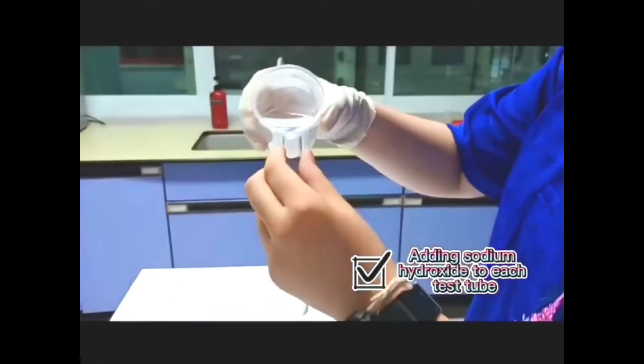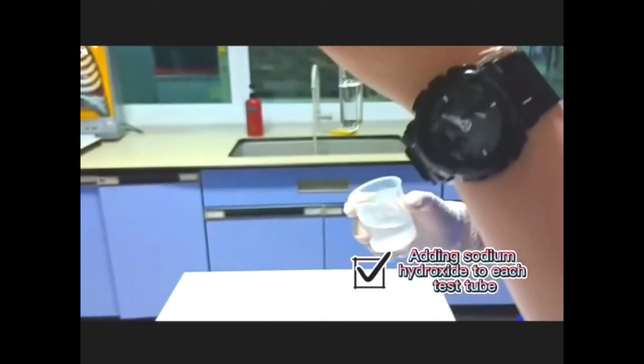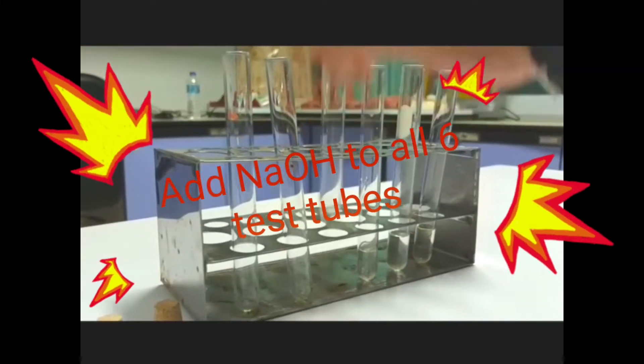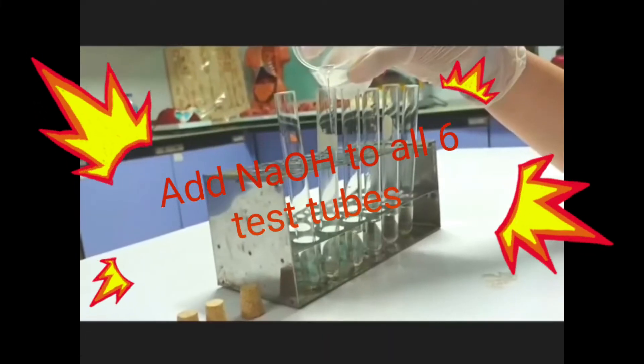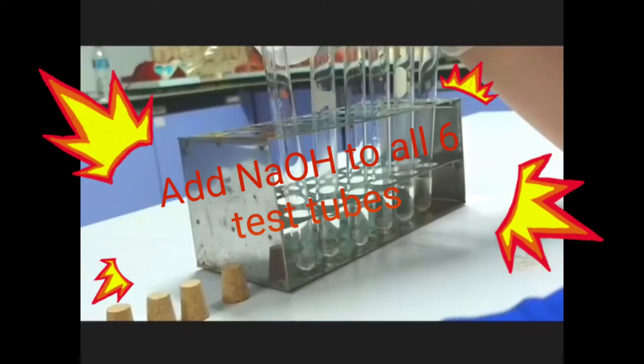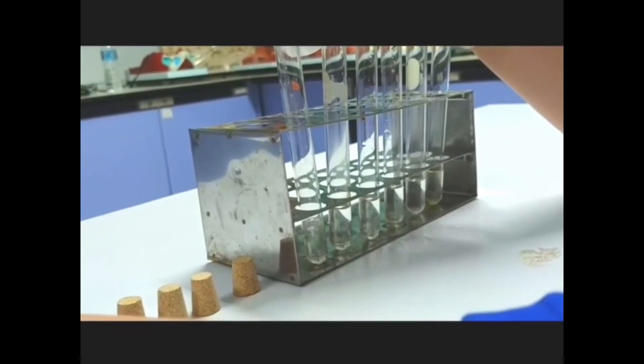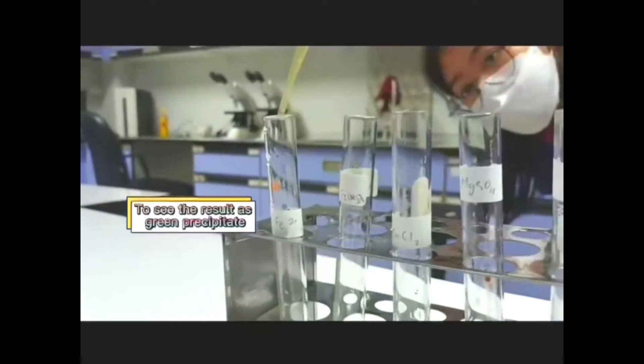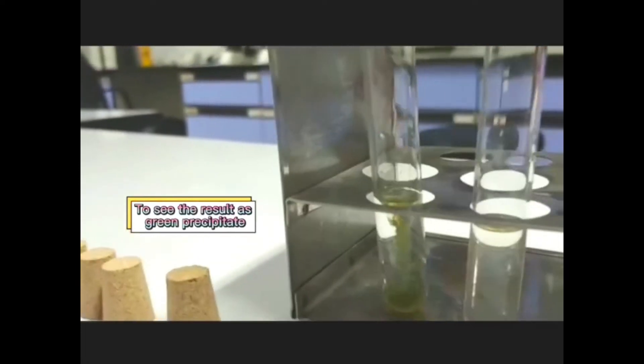First up, we are going to add sodium hydroxide to each test tube. We are going to add iron(II) nitrate to the first test tube to see the results as green precipitate.